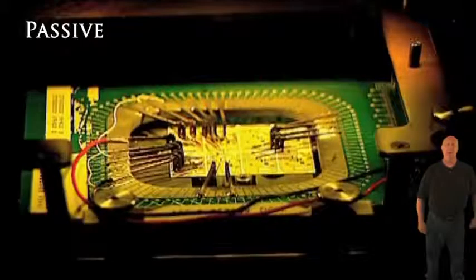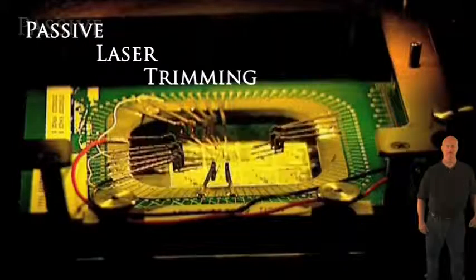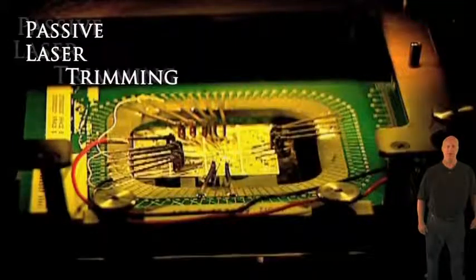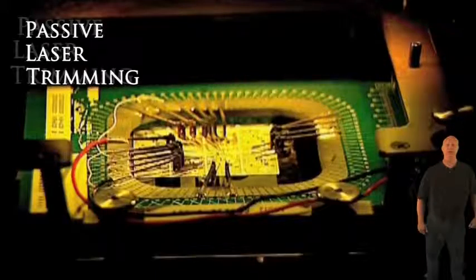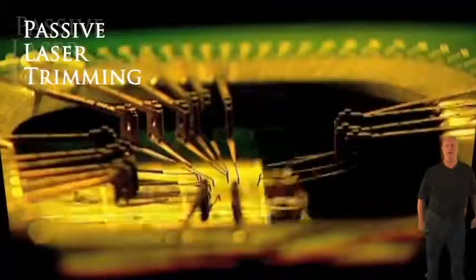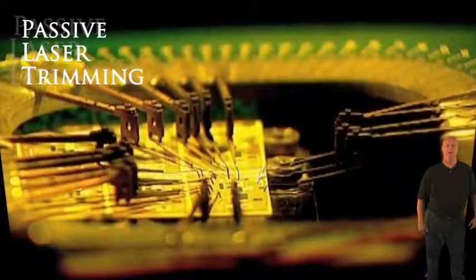The first level is called passive laser trimming and it is used during the manufacturing process of the circuit boards themselves. Resistance is measured in the circuit board connections and where resistance needs to be adjusted,